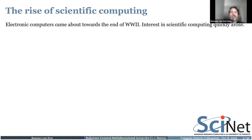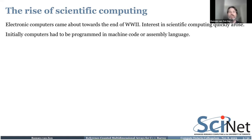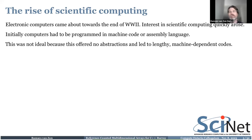Let's look at the history of scientific computing. Electronic computers came about towards the end of World War II, and very quickly after that people were trying to do scientific computing on them. Initially these computers had to be programmed in machine code, and later assembly language — a codification of machine code — but that's not ideal. It's cumbersome, has no abstractions, and was machine-dependent, so every new machine required rewriting the code.